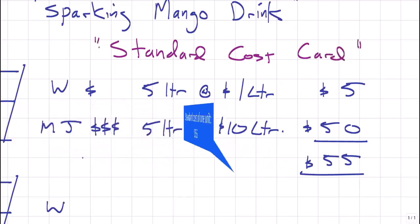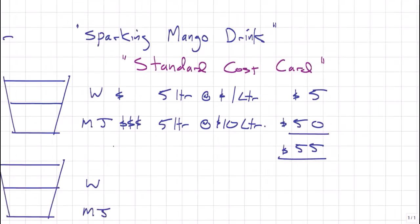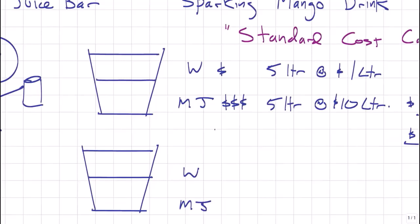Now the whole purpose of this is to control costs. And we need to understand now how much actual production costs. So first piece of information that we need is the actual output. The actual amount of sparkling mango drinks produced and sold is two. Wow, that's terrible, isn't it? We will evaluate sales performance with our two sales variances, the sales volume variance and the sales price variance.